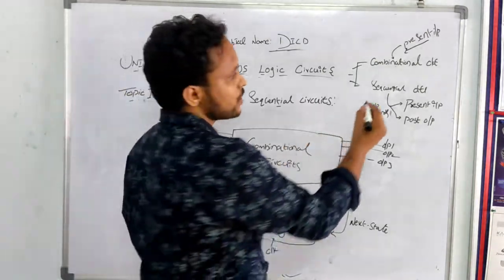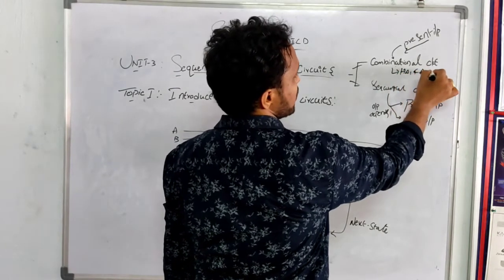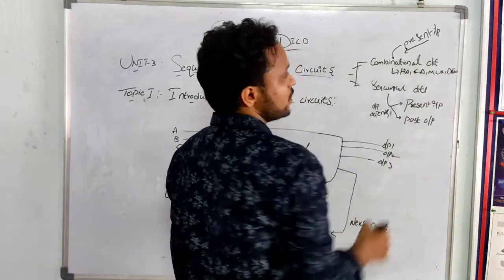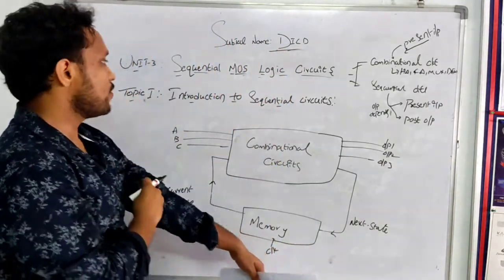What are the examples for the combinational circuits? Half adder, full adder, mux, demux. These are the basic examples for the combinational circuits. Let us come back to our topic.